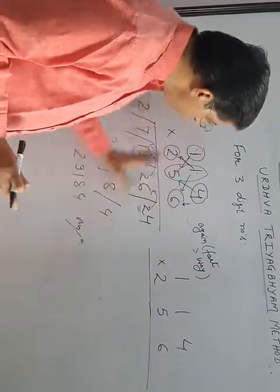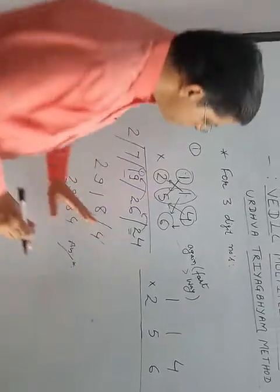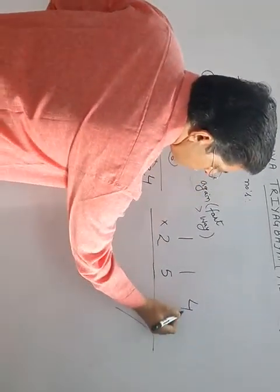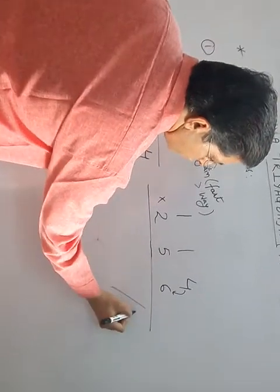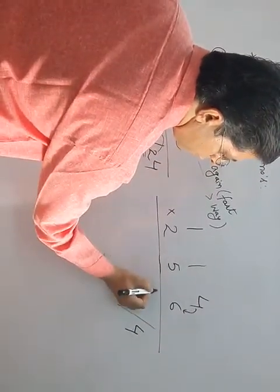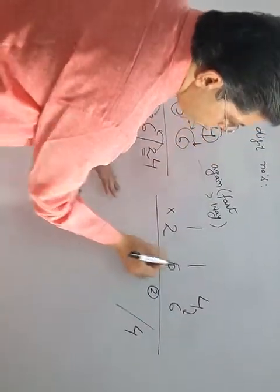Again, I am solving this sum in a fast way. Just you see, 6 times 4 is 24. 4, I am taking here. 2 is carry over here.